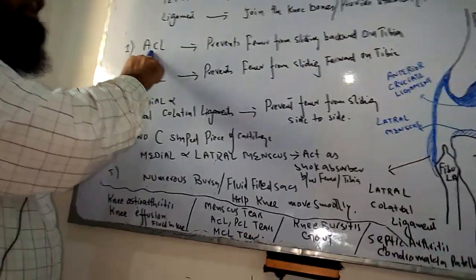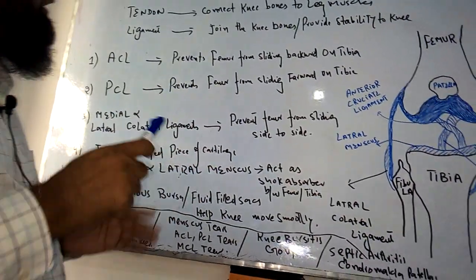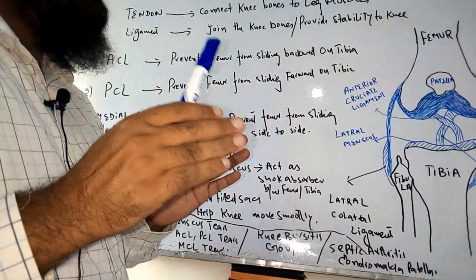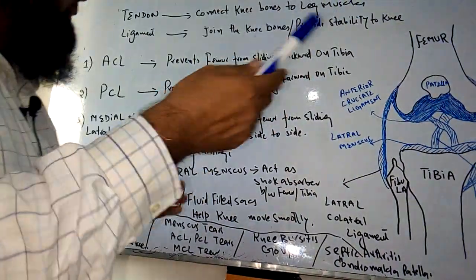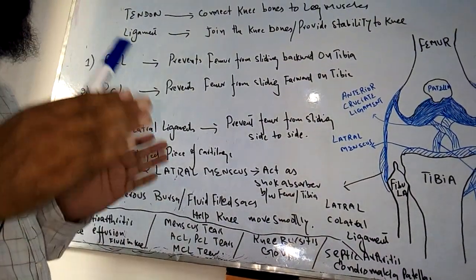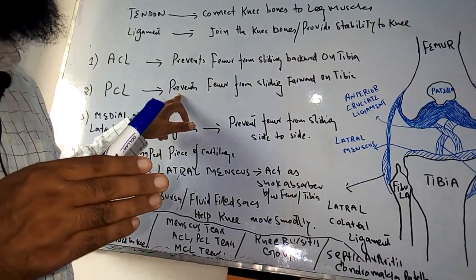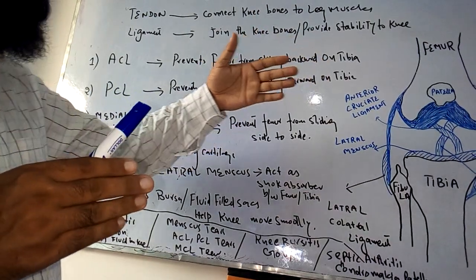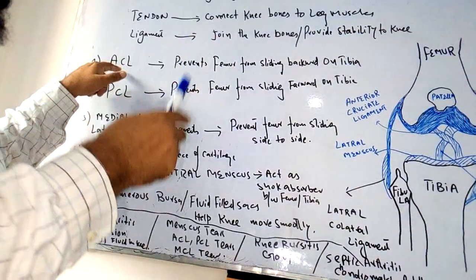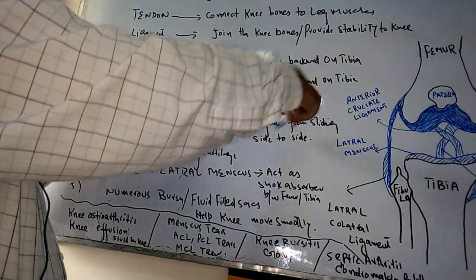ACL stands for anterior cruciate ligament. The anterior cruciate ligament prevents the femur from sliding backward on the tibia. PCL means posterior cruciate ligament — the posterior cruciate ligament prevents the femur from sliding forward on the tibia. So these two are opposite to each other: ACL prevents backward sliding and PCL prevents forward sliding on the tibia.